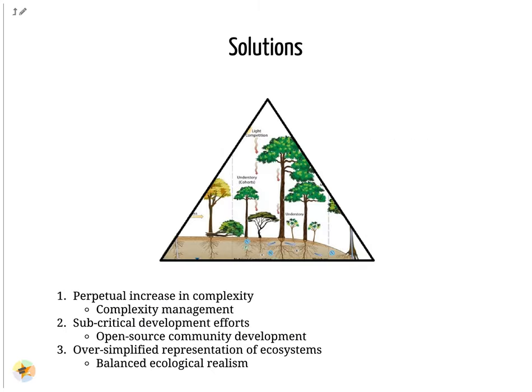To develop these kinds of models and achieve our final goal, which is to improve climate models and better assess the impact of climate changes on our societies, we need to find a way to manage the complexity of the codes by using a modular approach, make all our development open source and available to all the community, and make compromise and balance ecological realism.